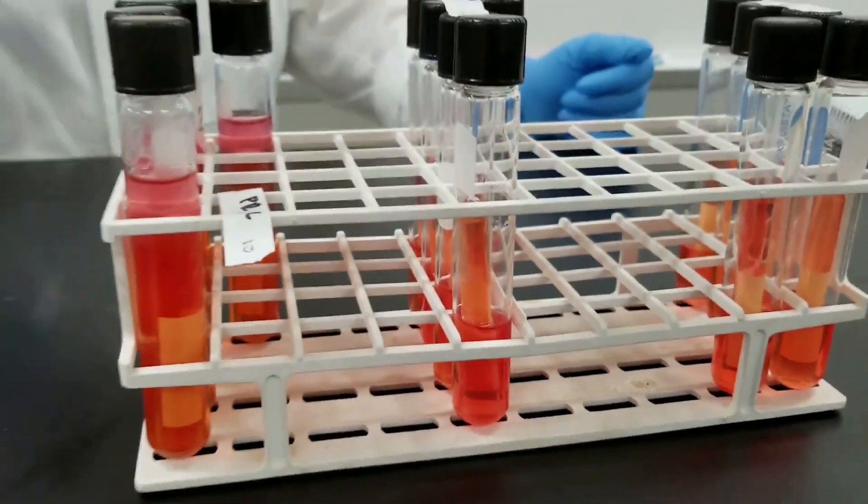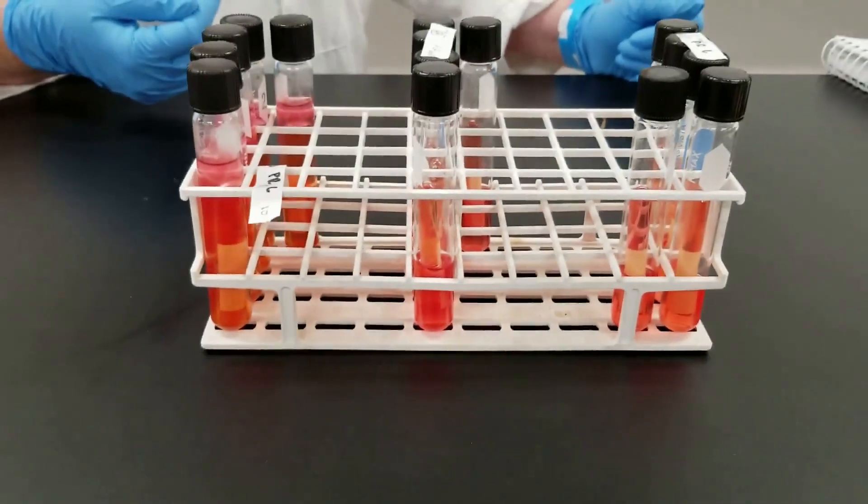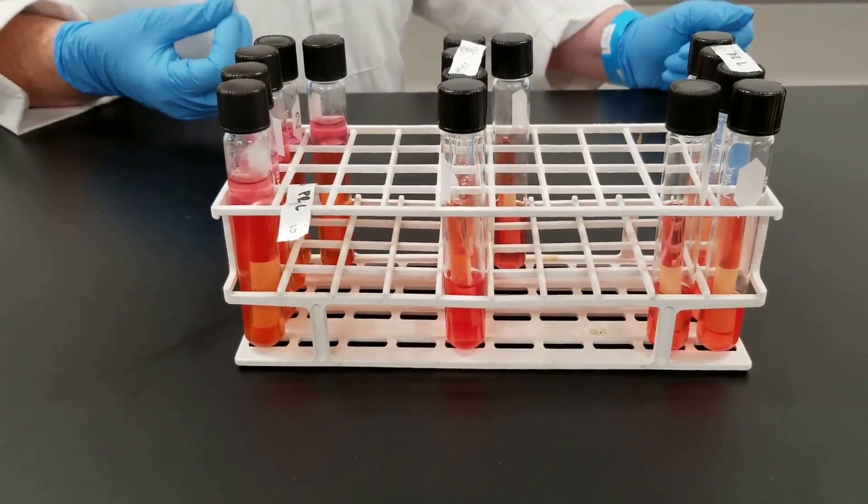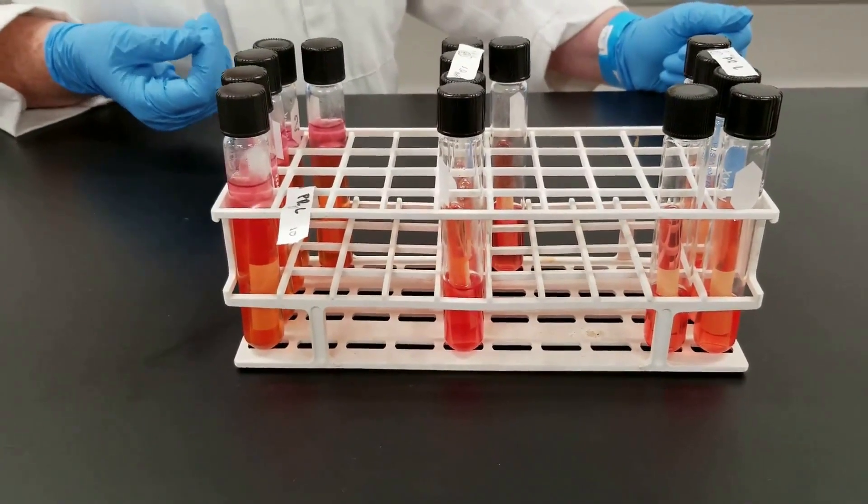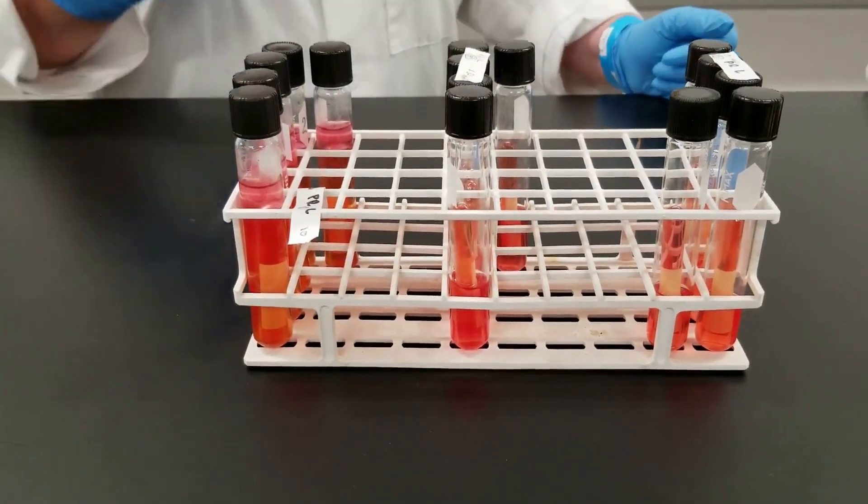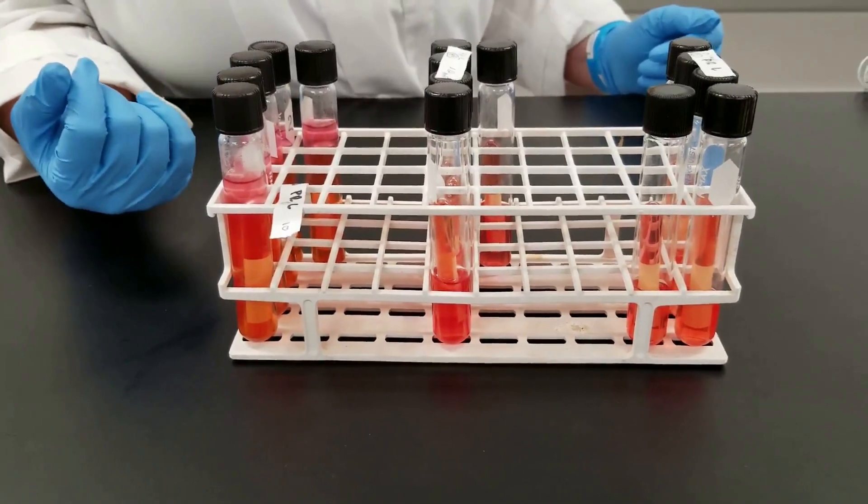You have the phenol red pH indicator. If acid is produced, it would turn yellow. That is what you'd be looking for as a positive result. You also have the inverted Durham tubes to collect gas if gas was also produced.